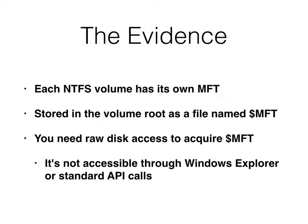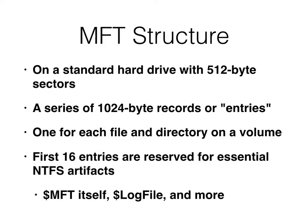The MFT is stored in the root of the drive, but you can't see it anywhere in the Windows API. You're not supposed to mess with it, so it's hidden even more than hidden system files — the Explorer process is not allowed to see it. But if you have raw disk access, like looking at a forensic disk image with a forensic tool, you can see it. On a standard hard drive with 512-byte sectors, MFT entries are 1,024 bytes each, and every file and directory has one such entry.